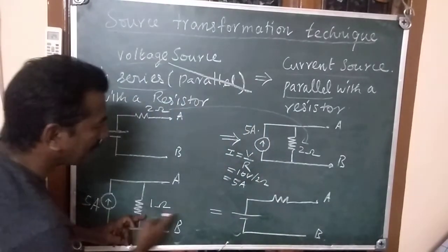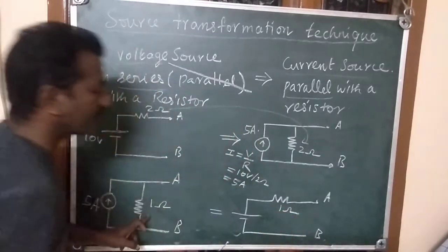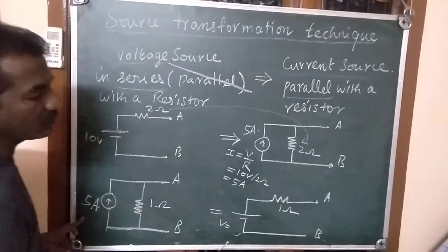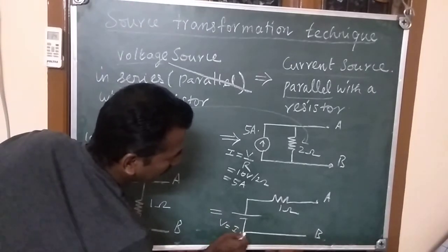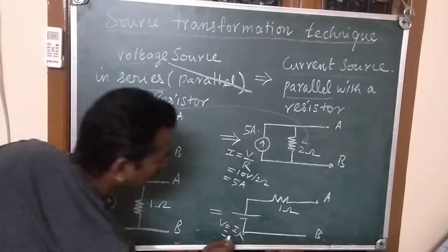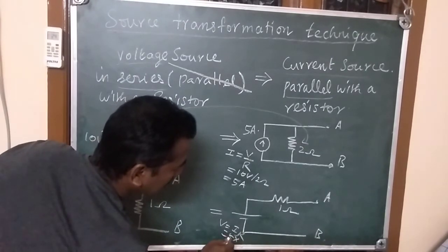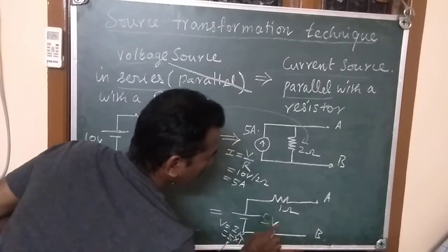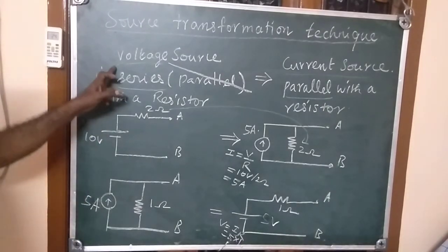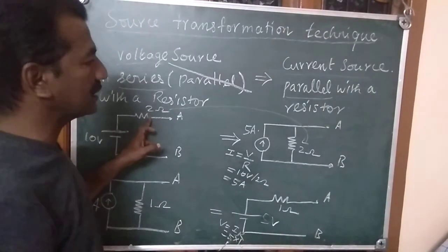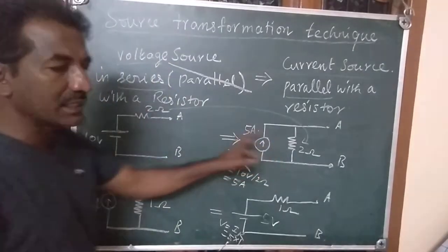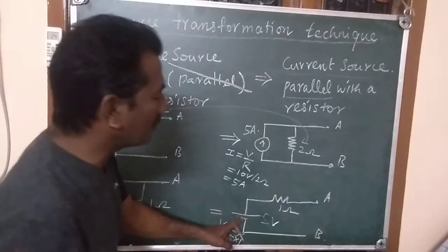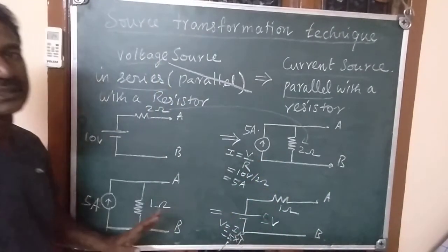The 1 ohm resistance remains as 1 ohm. To find the value of the voltage source, we use Ohm's law: V is equal to I times R. Here I is 5 amperes and R is 1 ohm, therefore the voltage source is 5 volts. So a voltage source in series with a resistance can be converted into a current source parallel with a resistance, and vice versa.